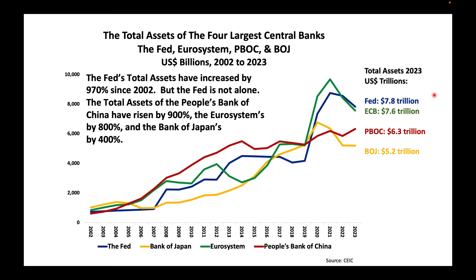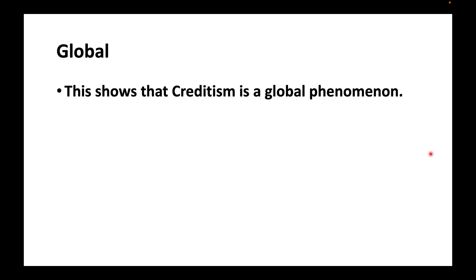Now the Fed's total assets amount to $7.8 trillion. The ECB's amount to the equivalent of $7.6 trillion. The People's Bank of China, the equivalent of $6.3 trillion. And the Bank of Japan's, the equivalent of $5.2 trillion. This shows that creditism is a global phenomenon.